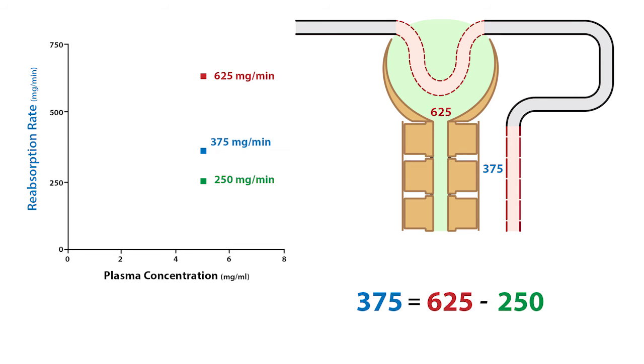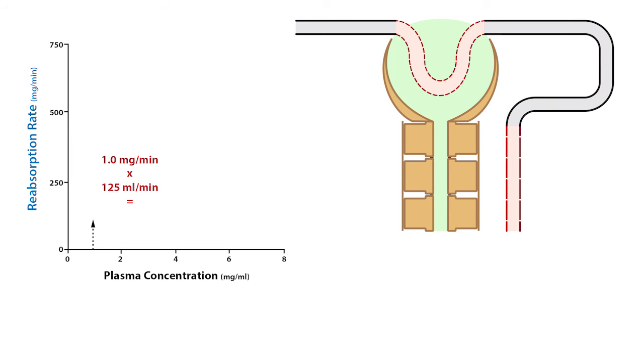For example, a normal plasma glucose concentration of 1 milligram per ml and a GFR of 125 milliliters per minute yields a filtered load of 125 milligrams per minute. From this, we see that the filtered load is linear. At this plasma glucose concentration, all of the filtered glucose is reabsorbed along the proximal tubule via sodium-dependent glucose co-transporters.